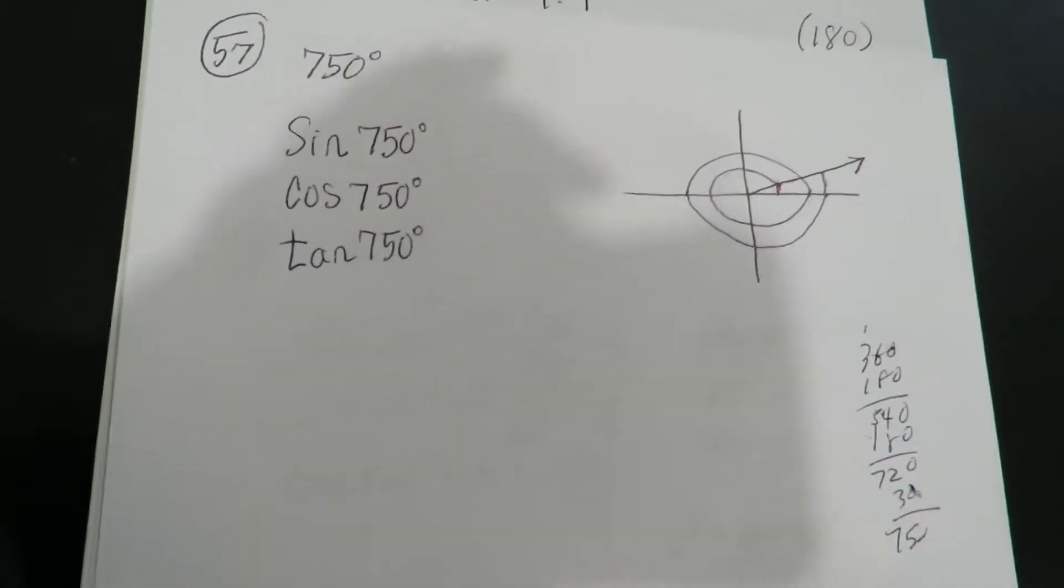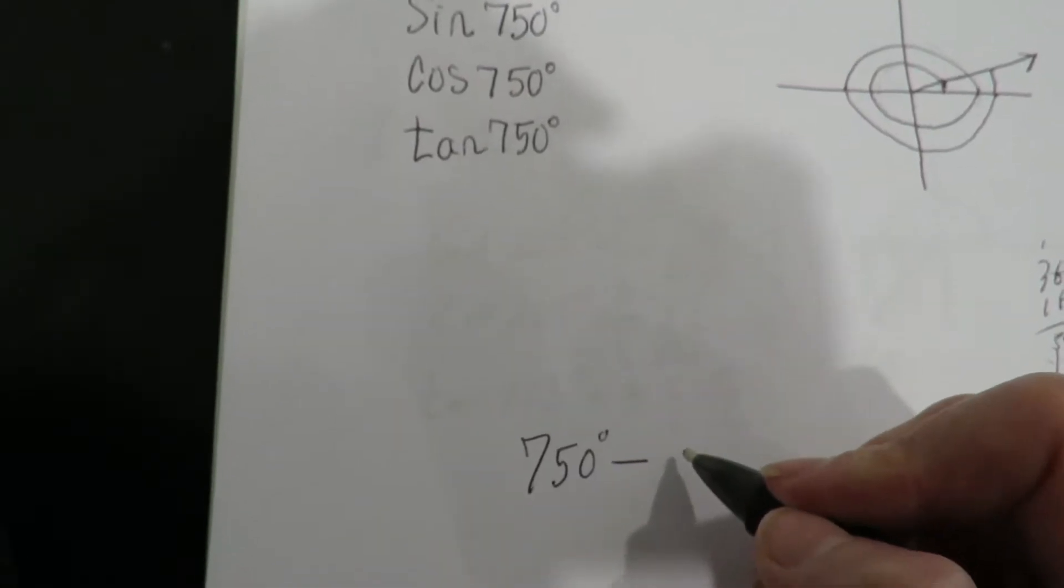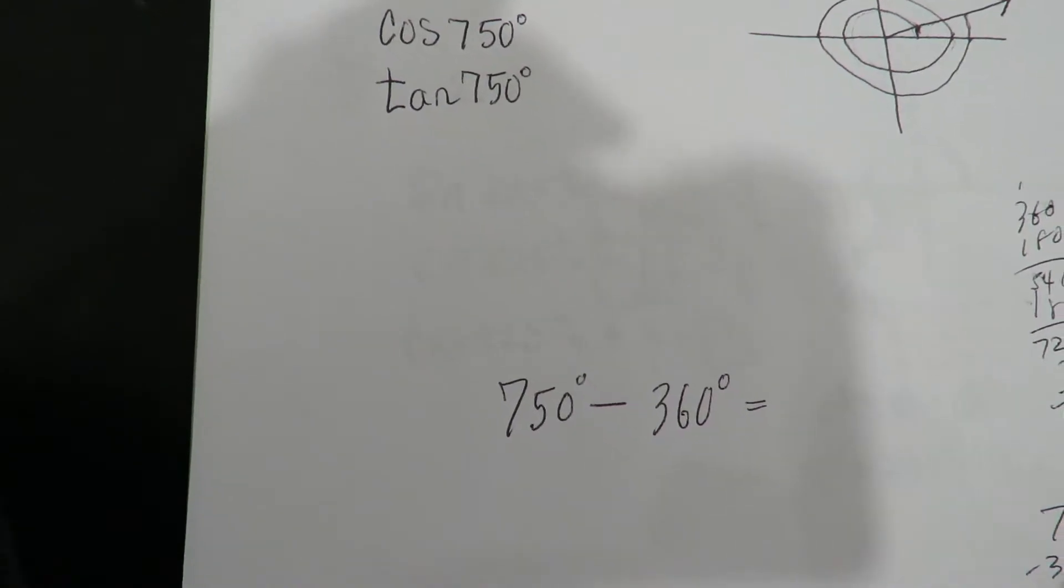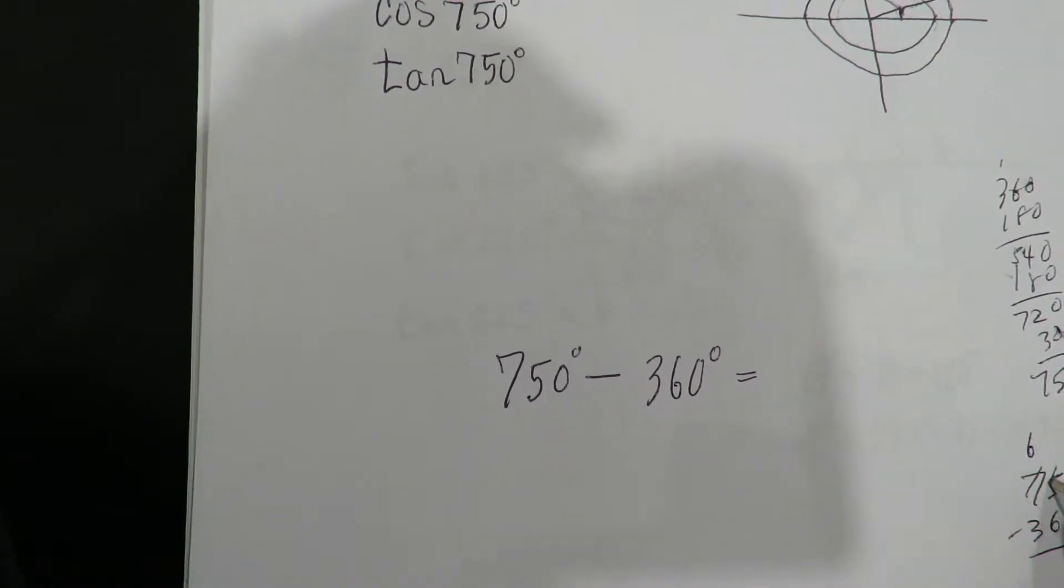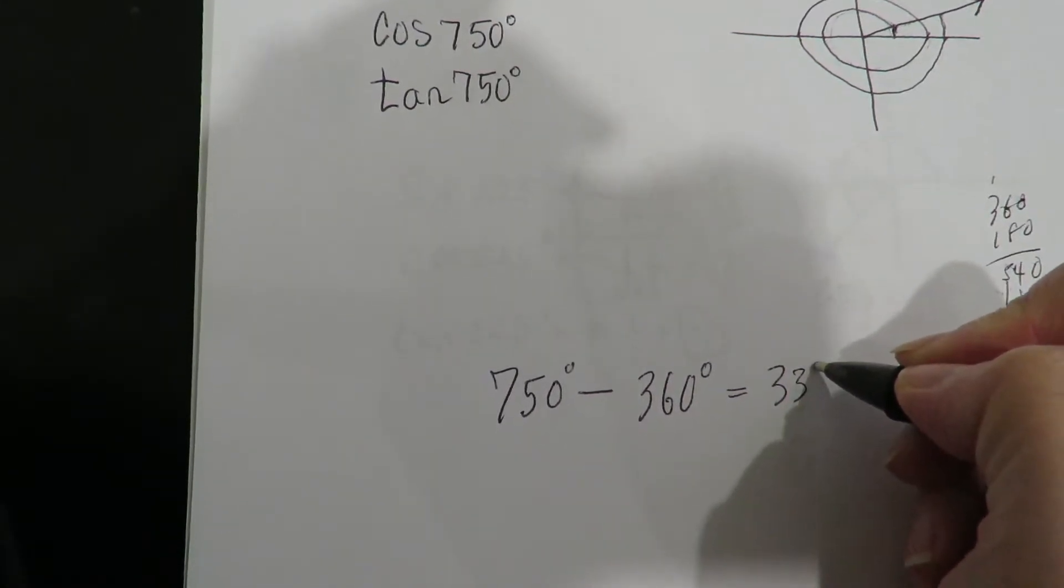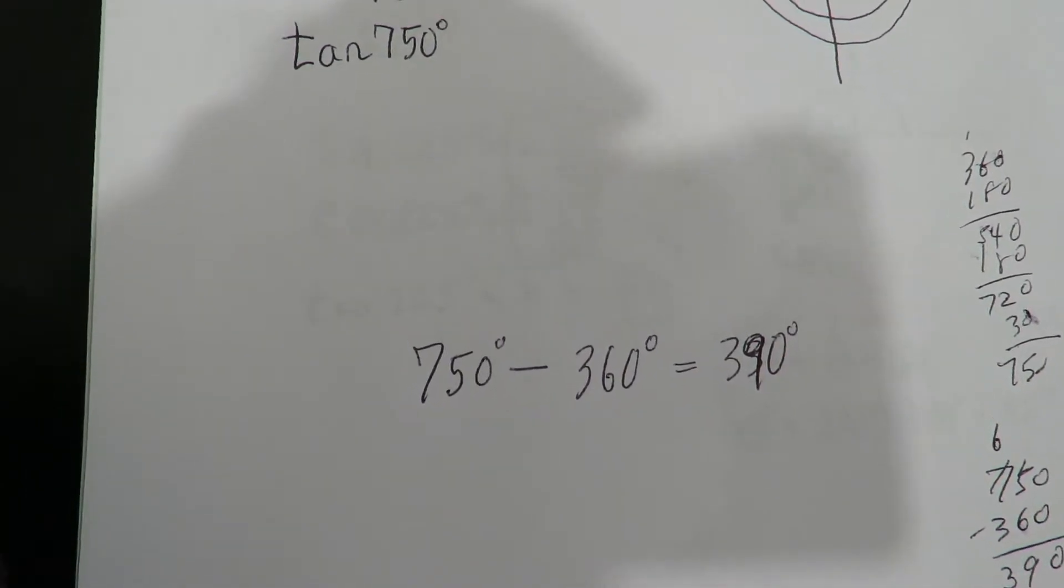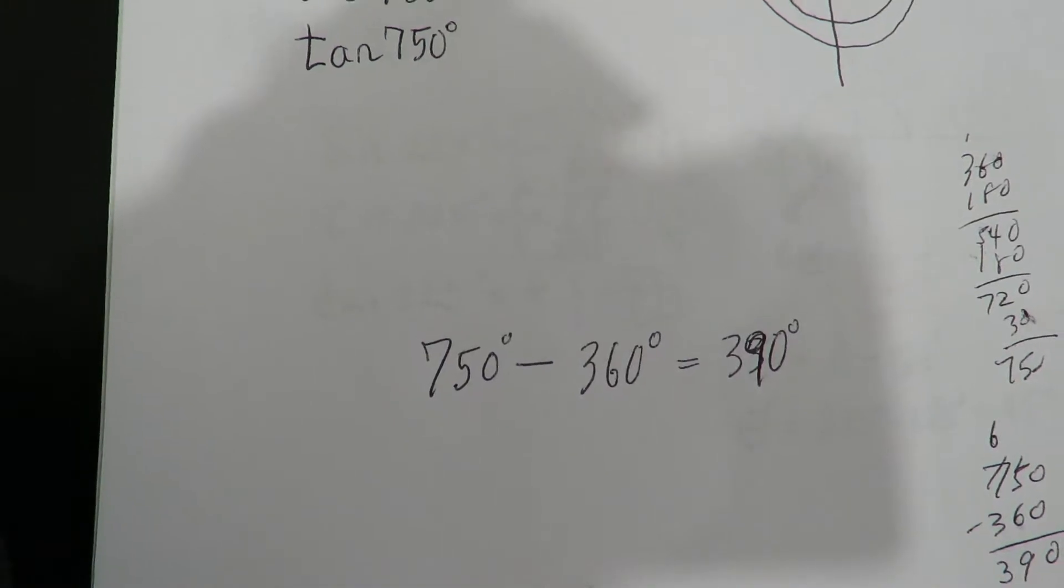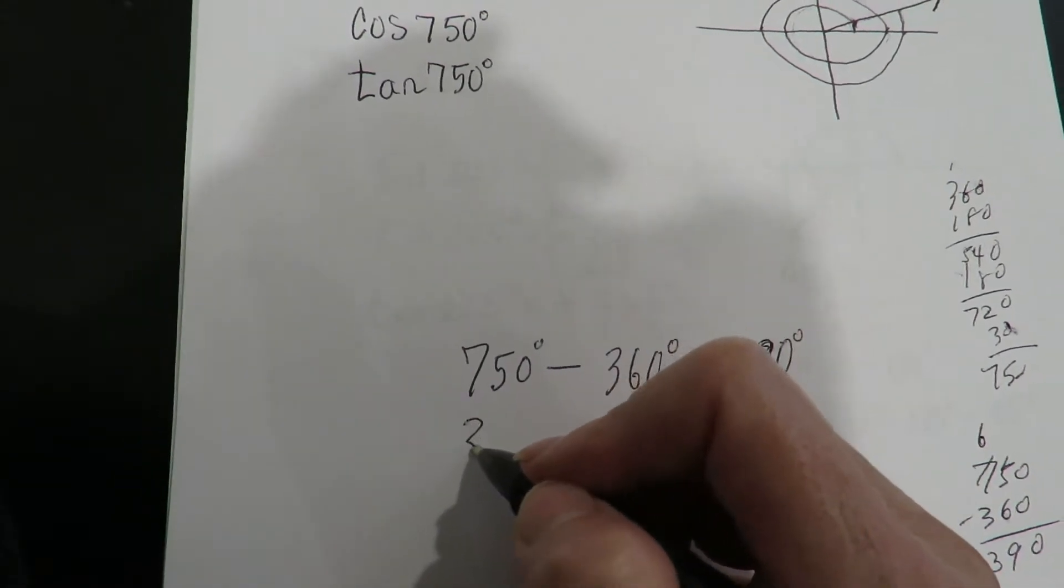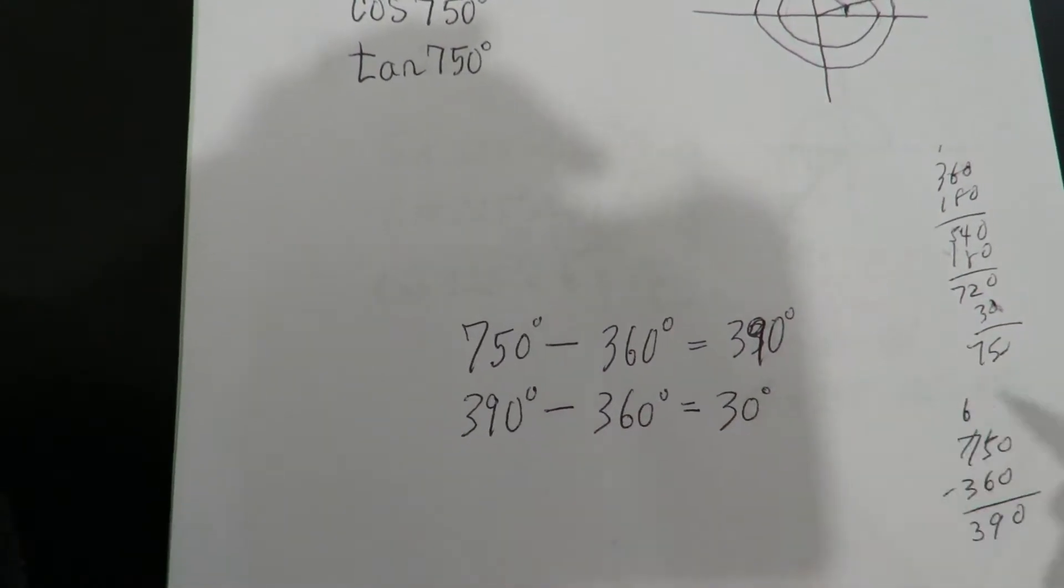So that's where the formula for the reference angles falls apart. Because if we take the 750 and we subtract one revolution, we get 390. And 390 is not a reference angle. It's not a reference angle. So that means we then take 390 and we unwrap it again. And that's where we get 30 degrees.